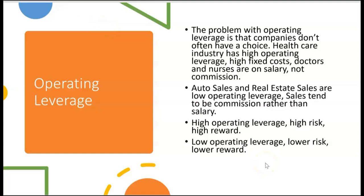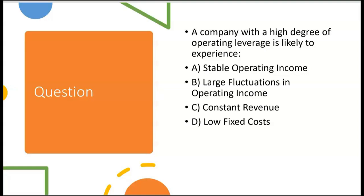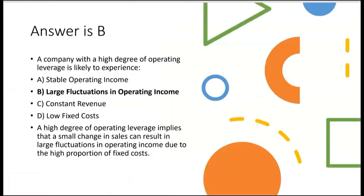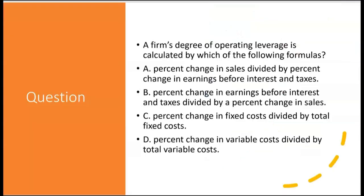Practice question: A company with a high degree of operating leverage is likely to experience what? A) stable operating income — no, that's low operating leverage. B) large fluctuations in operating income — yes. C) constant revenue — nobody guarantees constant revenue. D) low fixed costs — no, high operating leverage means high fixed costs. The answer is B. A high degree of operating leverage implies that a small change in sales can result in large fluctuations in operating income due to the high proportion of fixed costs.